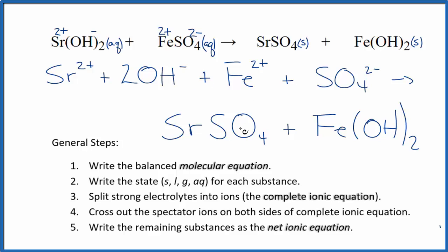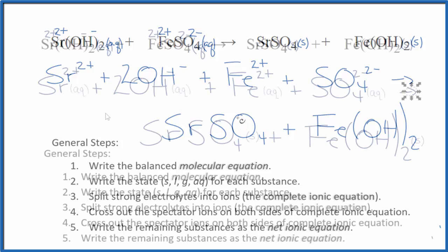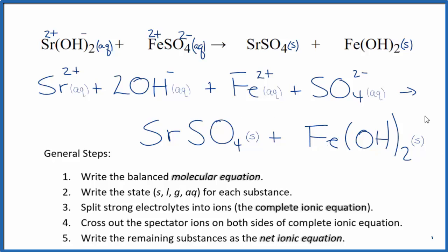Let me clean this up, write the states in. We'll have our net ionic equation. So this is the net ionic equation for strontium hydroxide plus iron 2 sulfate.